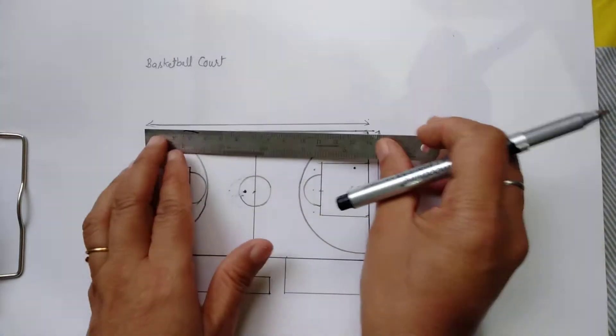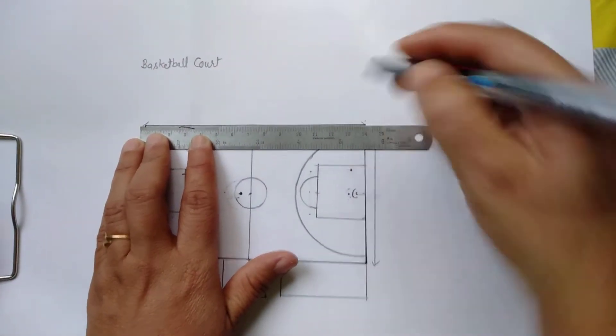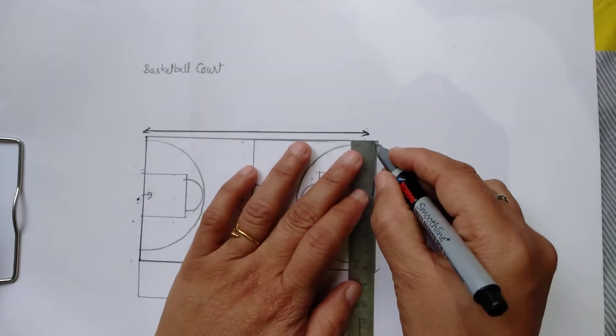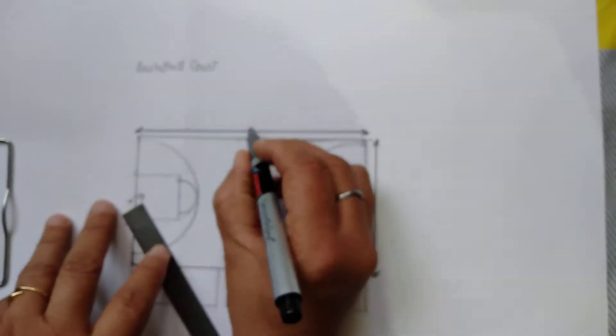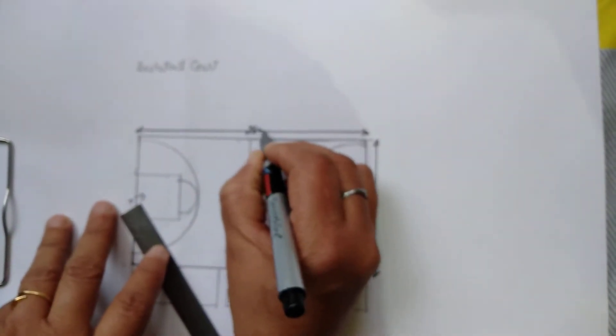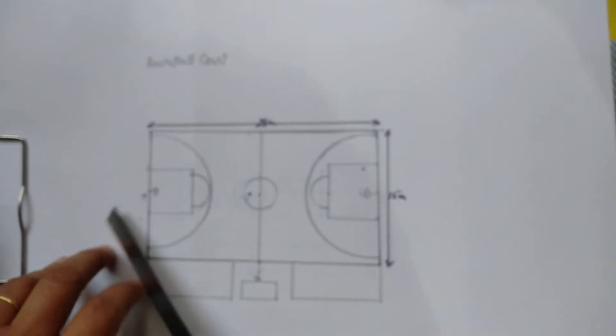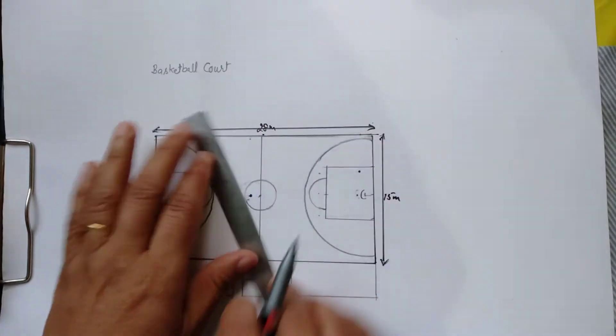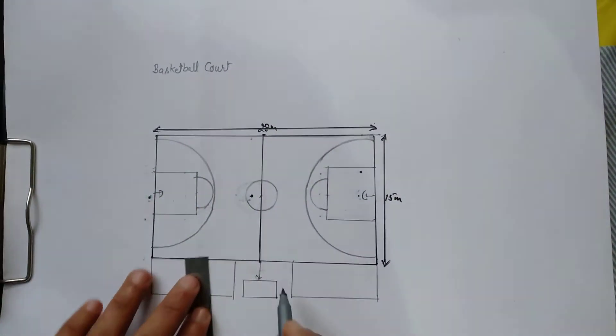With the help of scale, we put the length and breadth markers. The original measurement is 28 meters breadth 15 meters. The center of the scale is 7. We divide the court in two parts.